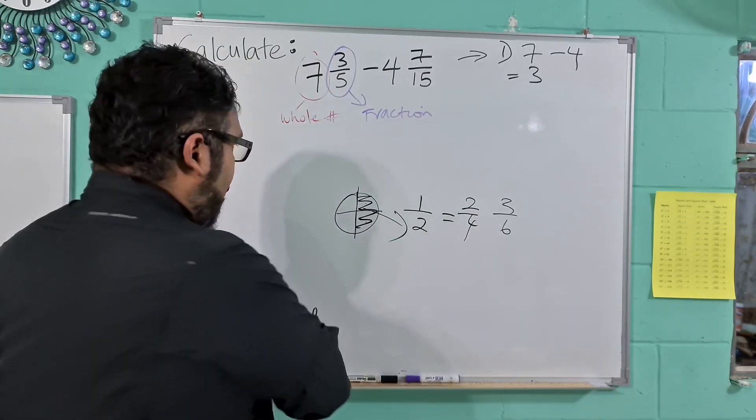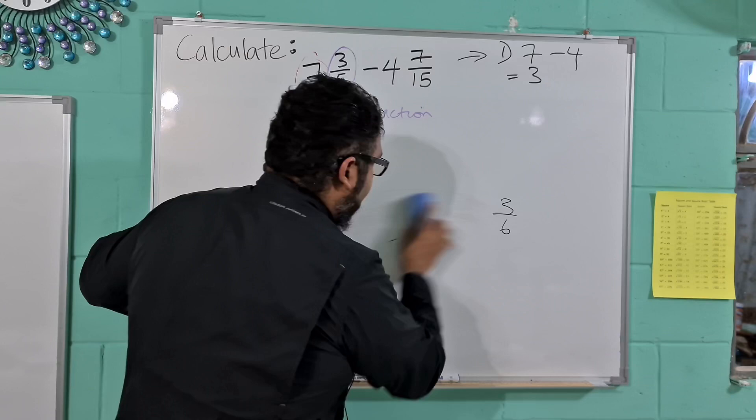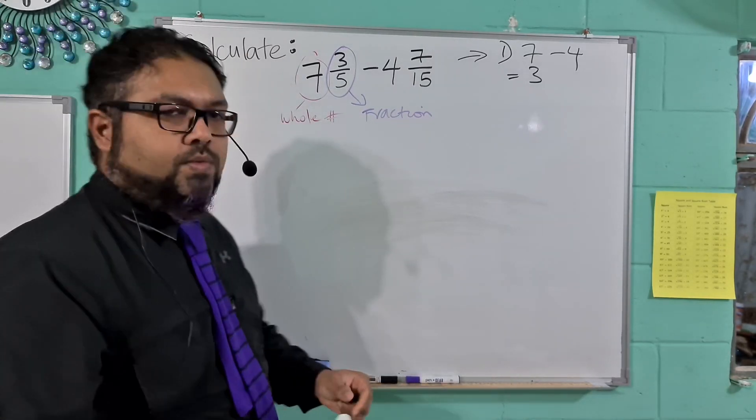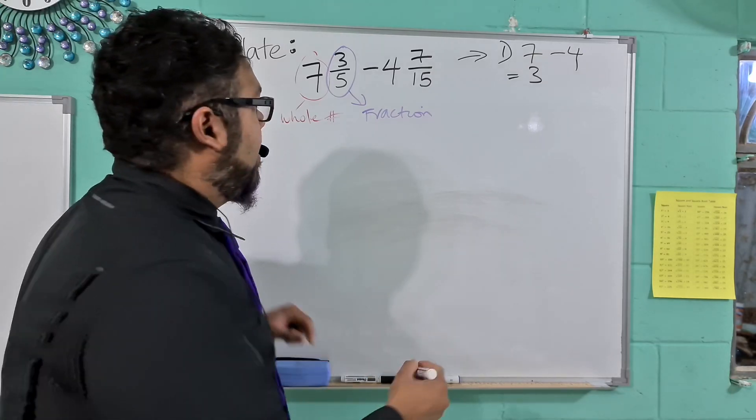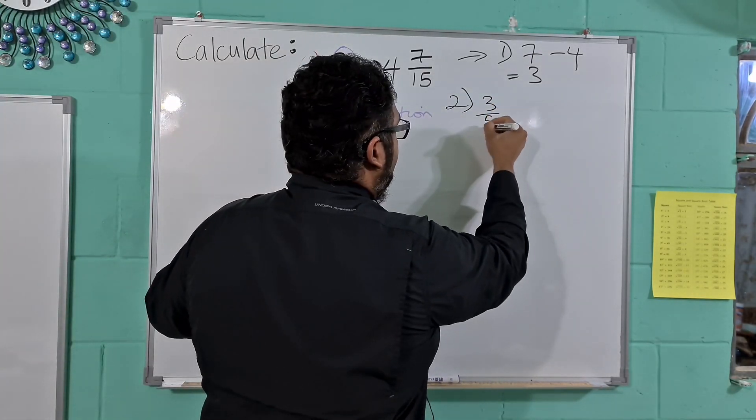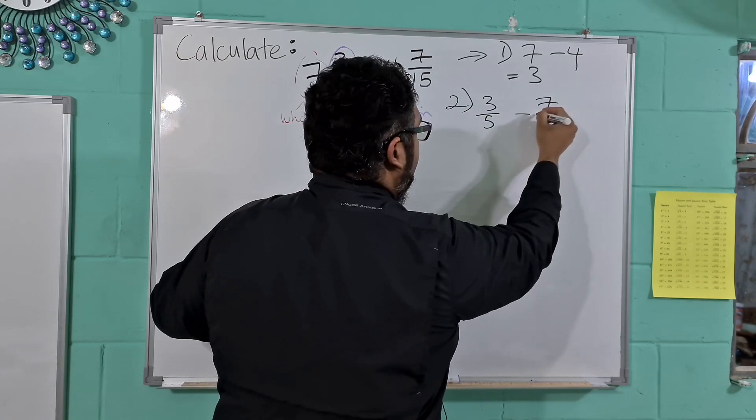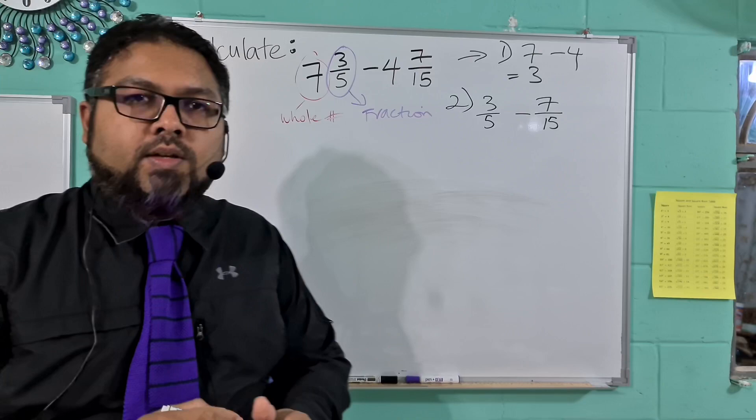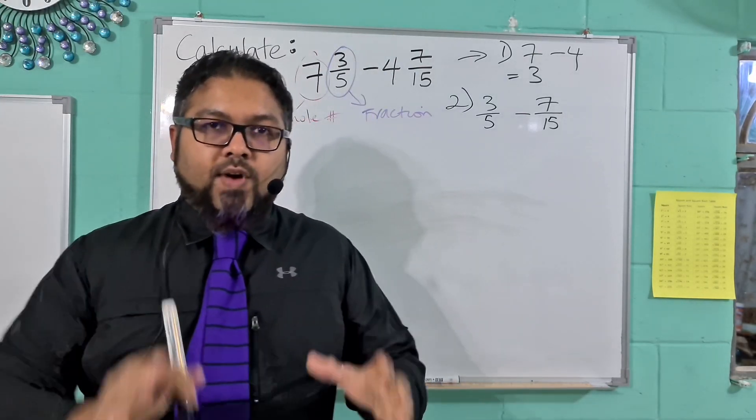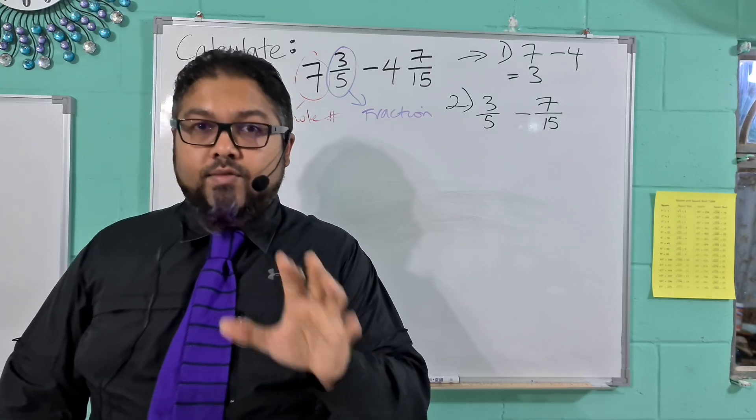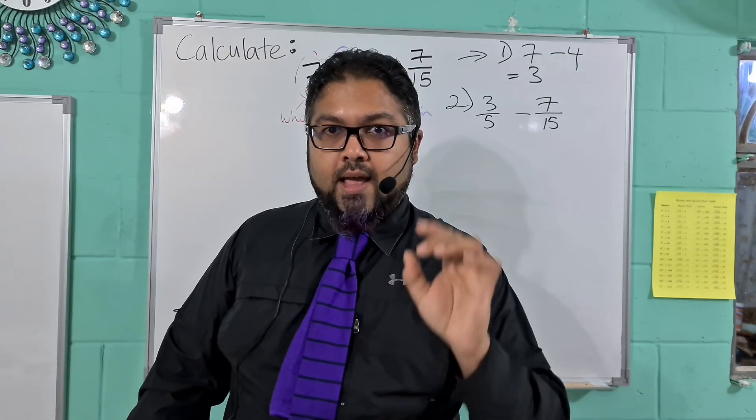We just have to respond with a numerical value. Just a number does it, super easy. Alright so let us erase this and let us start to work on part 2 of the question. Part 2 of the question would be 3 over 5 minus 7 over 15. What we're dealing here is with fractions. These are not whole numbers.